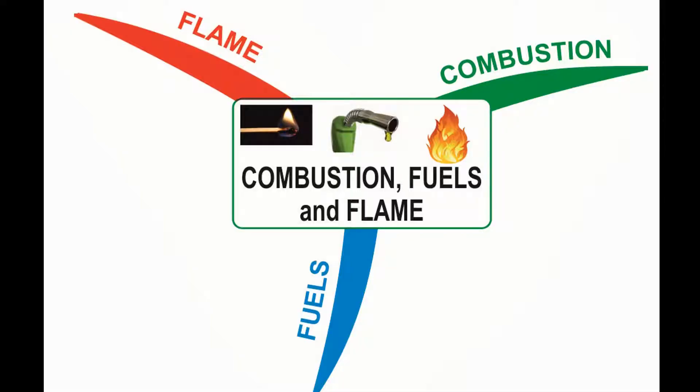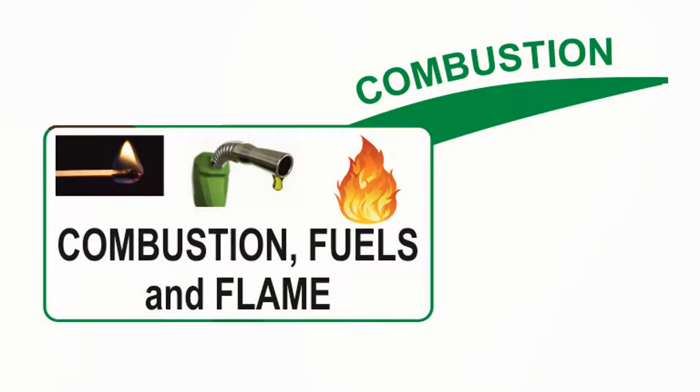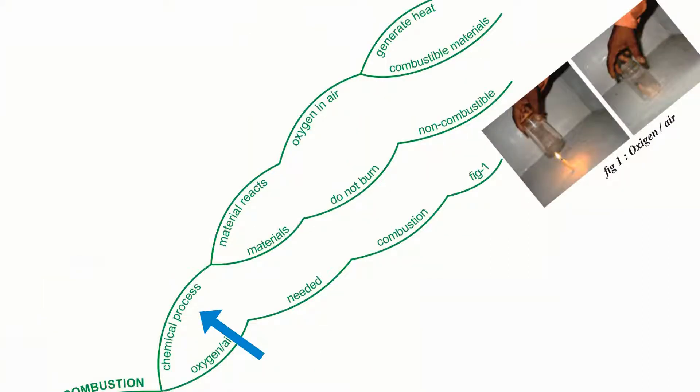The important concepts of this chapter are Combustion, Fuels and Flame. Let us see the first branch combustion. Combustion is a chemical process in which a material reacts with oxygen present in air to generate heat.